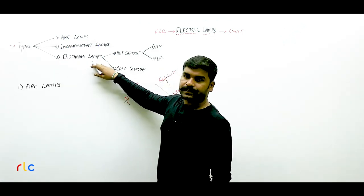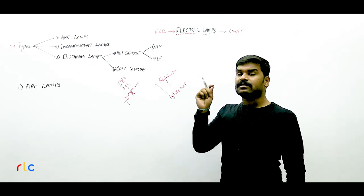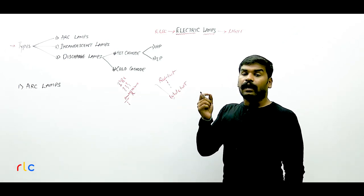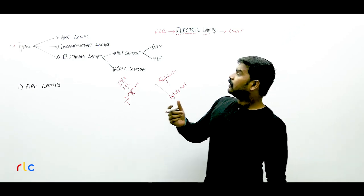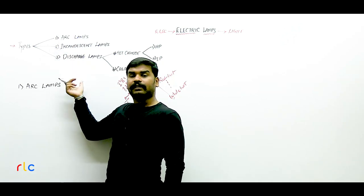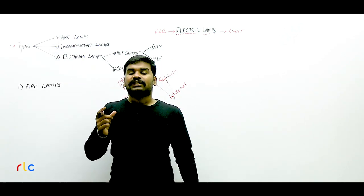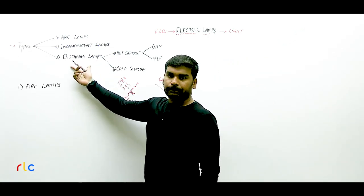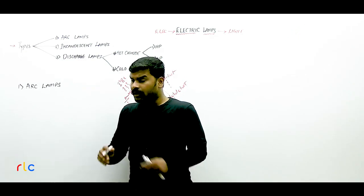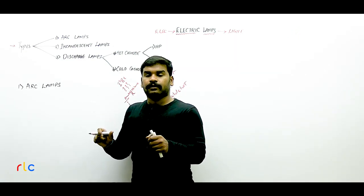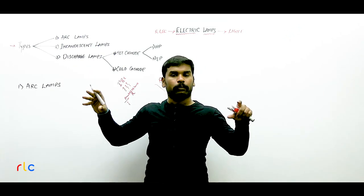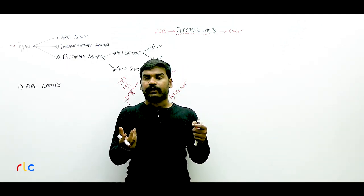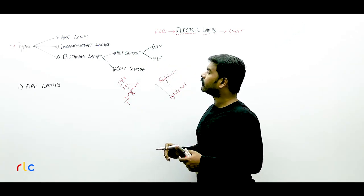The third type of lamp is discharge lamps — lamps working based on some discharge. In electrical engineering, an arc can discharge. You might ask: if there is already an arc lamp, how can there be another discharge lamp? The difference is that in a discharge lamp, the arc occurs in a controlled environment — inside a separate tube with specially maintained conditions, different gas fill, and different pressure.